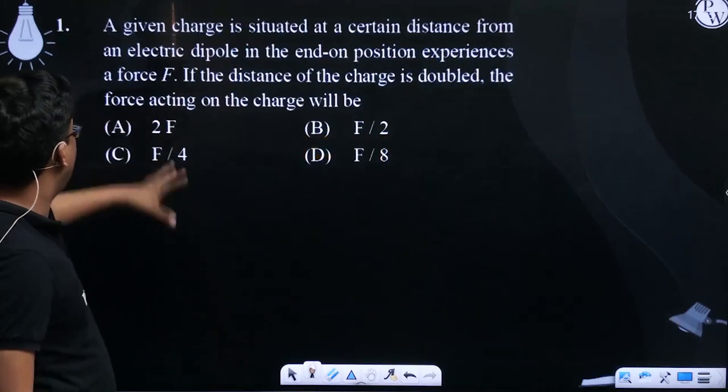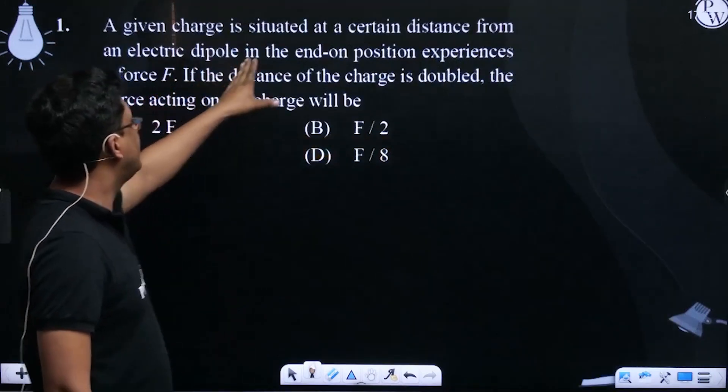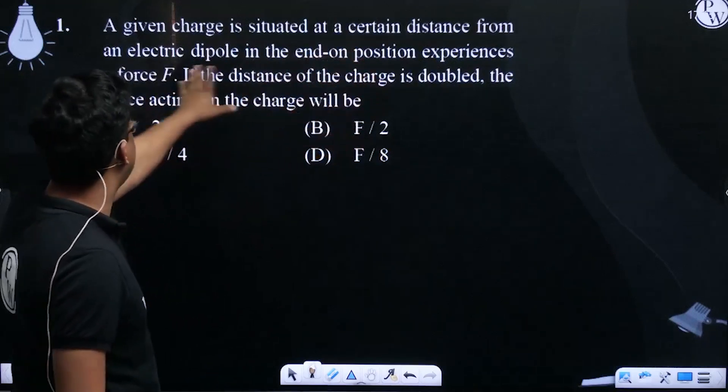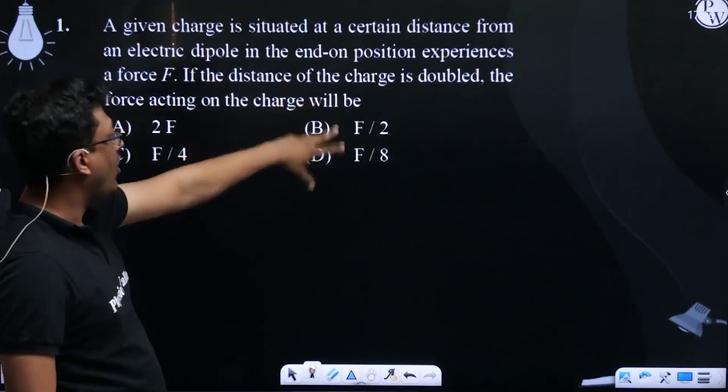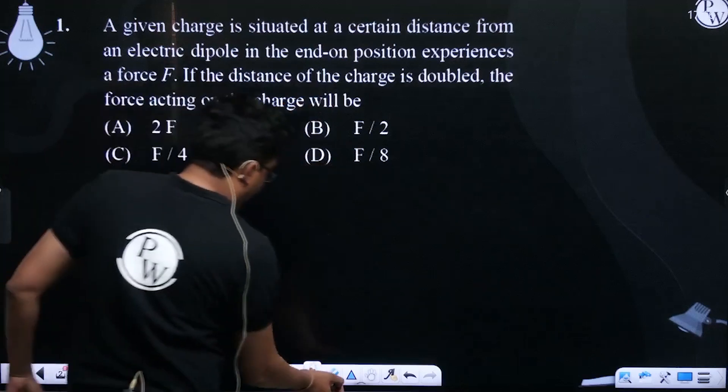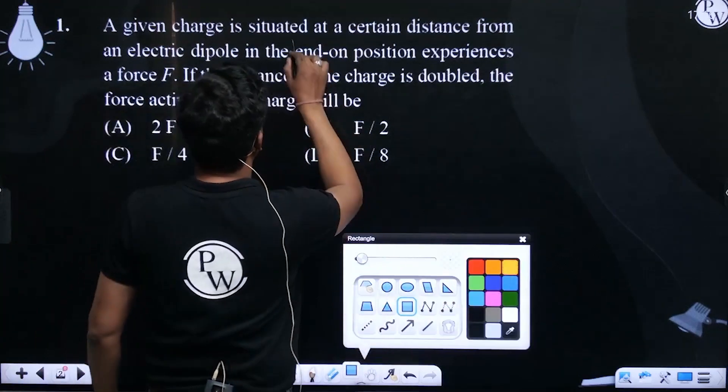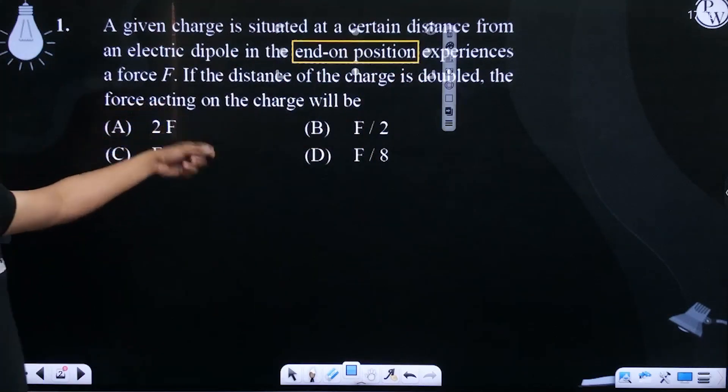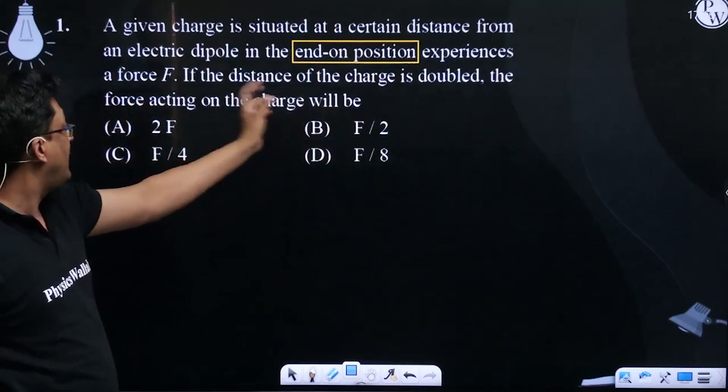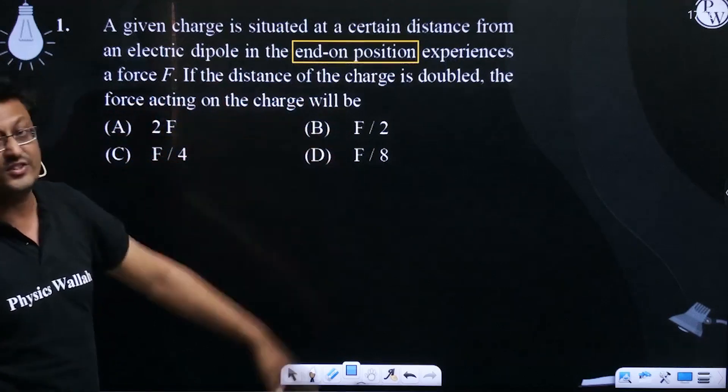So our first question is, a given charge is situated at a certain distance from an electric dipole in the end on position. End on position experiences a force F. If the distance of the charge is doubled, the force acting on the charge will be, right?